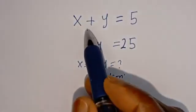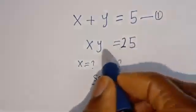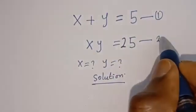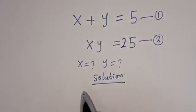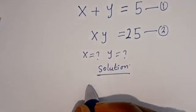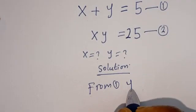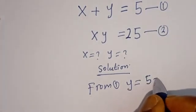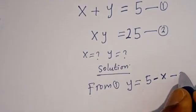Then from here, x plus y is equal to 5 — let's call this equation 1. xy is equal to 25 — let's call this equation 2. From equation 1, y is equal to 5 minus x — let's call this equation 3.